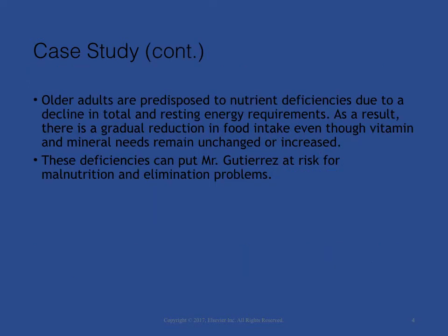Older adults are predisposed to nutrient deficiencies due to a decline in total and resting energy requirements. As a result, there is a gradual reduction in food intake even though vitamin and mineral needs remain unchanged or increased. These deficiencies can put Mr. Gutierrez at risk for malnutrition and elimination problems.